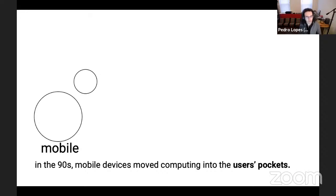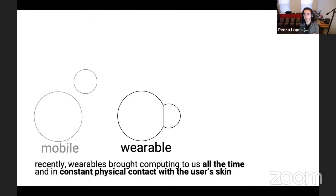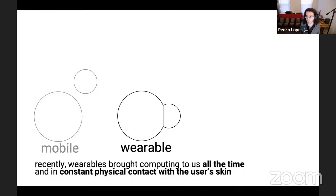I actually have one in my pocket right now. The next interaction paradigm that's been a bit of a revolution is wearable devices — they literally brought computing to us all the time because we can spend 24 hours with a wearable device. More importantly, wearables are in constant contact with the user's skin, so it's unsurprising that most wearables do physiological sensing — measuring skin resistance, conductance, biometrics, and all that.